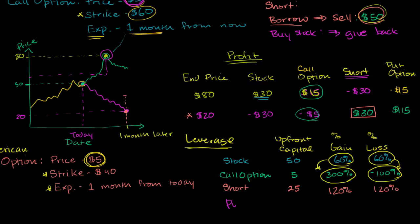But let's think about the put option. In the put option, we only had to put $5 up front to actually buy the put. And when the stock went down to $20, we made $15. So this was a 300% gain.